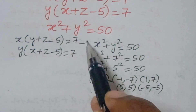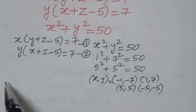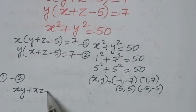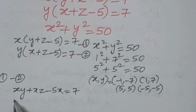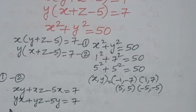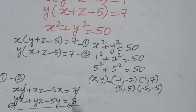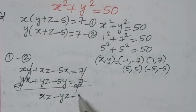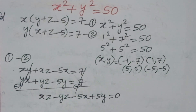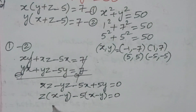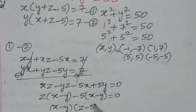Let us label the first two equations as (1) and (2). Subtracting (2) from (1): xy + xz − 5x = 7 minus yx + yz − 5y = 7. The xy terms cancel, giving xz − yz − 5x + 5y = 0. Taking z common: z(x − y) − 5(x − y) = 0, which factors as (x − y)(z − 5) = 0.